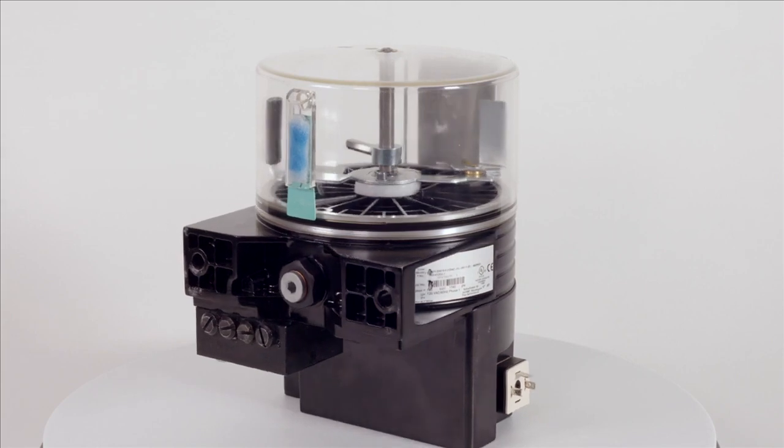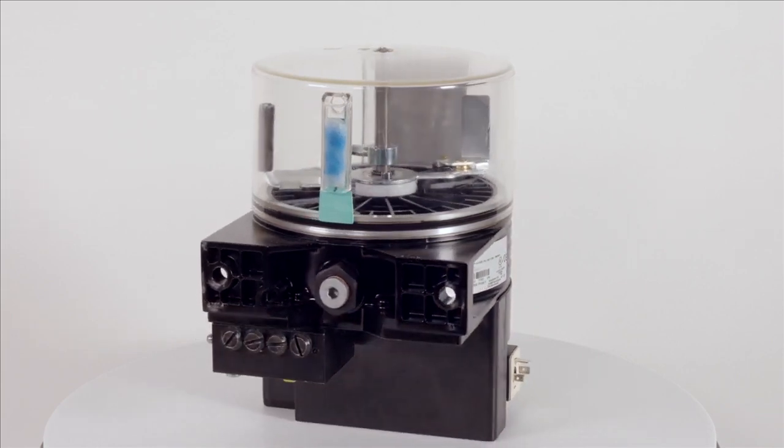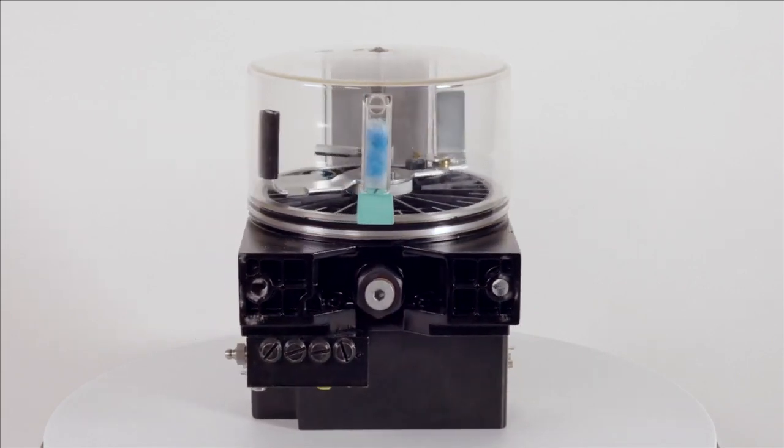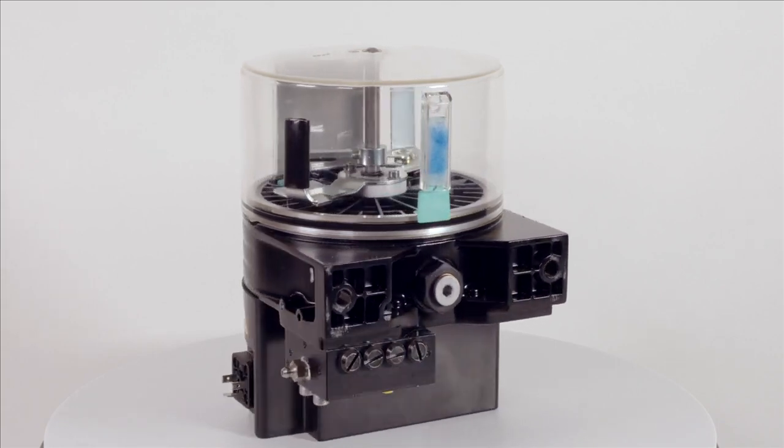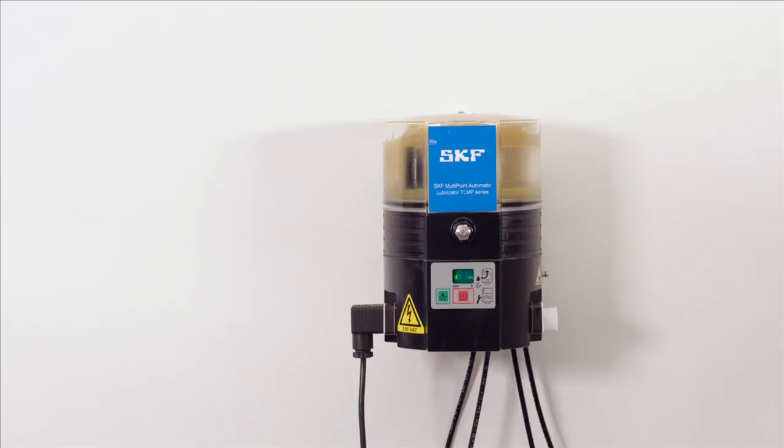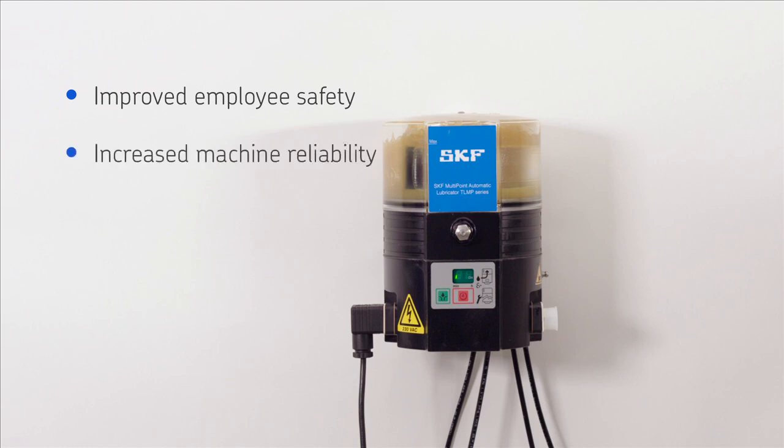This is done dynamically while the machine is operating, allowing the lubricant to penetrate the wear surfaces and continuously protect against contaminants. Key benefits of using an automatic lubricator include improved employee safety, increased machine reliability and optimized maintenance operations.